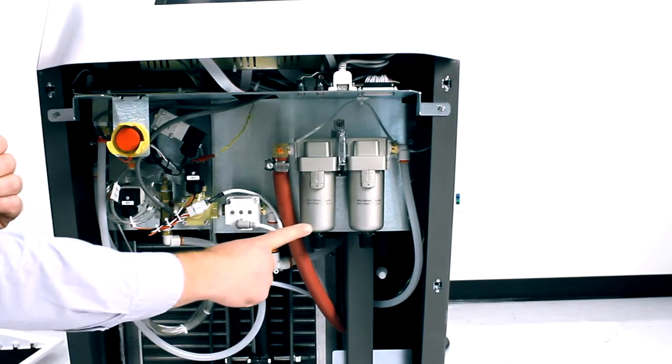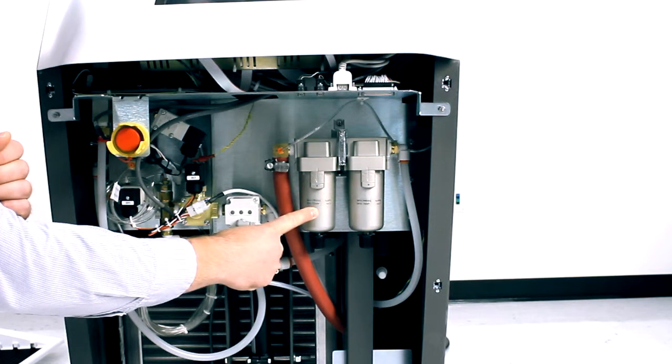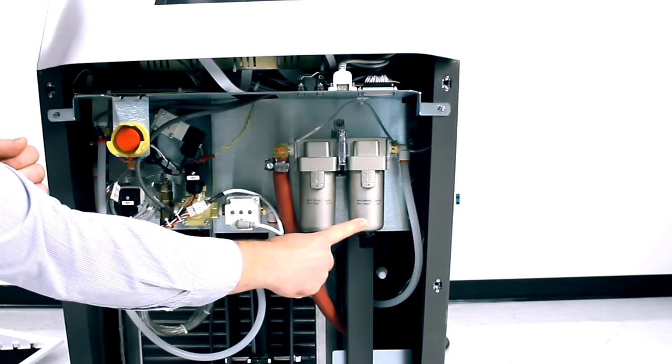The particulate filter is first. This removes dust, debris, and dirt from the airline. The coalescing filter removes moisture from the airline.